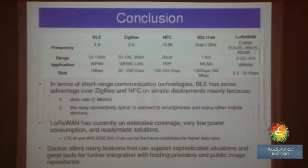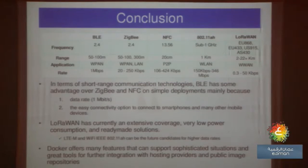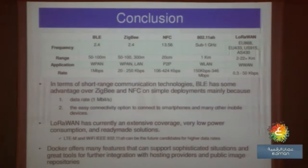To conclude my presentation, here is a comparison between the connectivity technologies. In terms of short-range communication technologies, BLE has the advantage over ZigBee and NFC and others because of the high data rate and easy connect option to connect to smartphones and many other mobile devices. LoRaWAN is the choice for extensive coverage, very low power consumption, and a ready-made solution. LTE-M and Wi-Fi 802.11ah can be the future solution. Thank you.